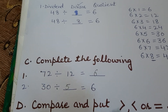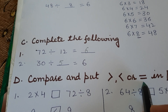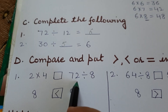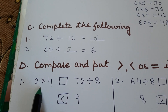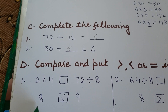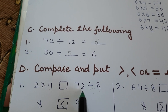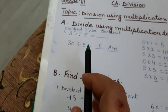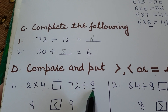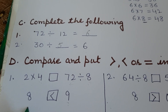Next is: compare and put a greater than, less than, or equal sign in the box. The sum is: 2 multiplied by 4 compared to 72 divided by 8. You have to compare which side is bigger and which is smaller. First, solve both sides. Two fours are 8. For 72 divided by 8, recall the 8-times table: 8 nines are 72, so the answer is 9. Since 8 is smaller than 9, you put a smaller than sign.